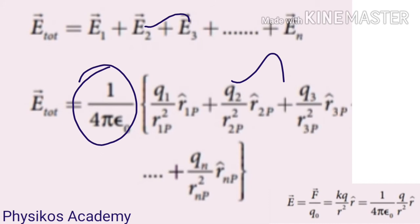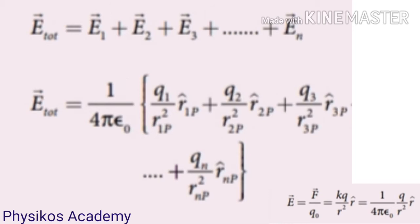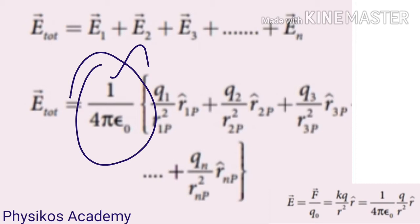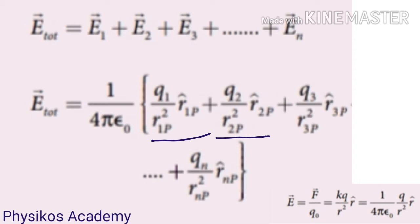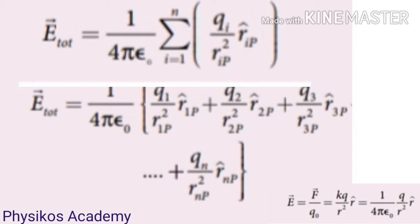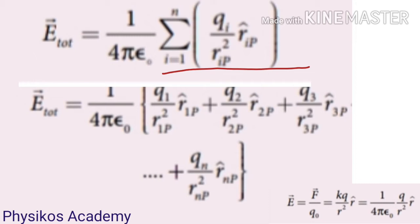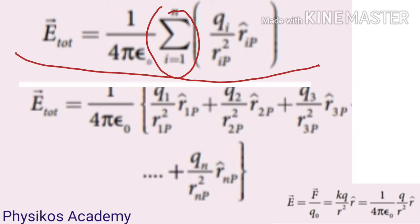Plus E2P vector is equal to 1 over 4π epsilon-naught, Q2 divided by R2P squared, into R2P cap, plus and so on up to 1 over 4π epsilon-naught, Qn divided by Rnp squared into R cap. The total E-vector is equal to 1 over 4π epsilon-naught, summation of Qi divided by Rip squared, into Rip cap, where the summation runs from i equals 1 to n.